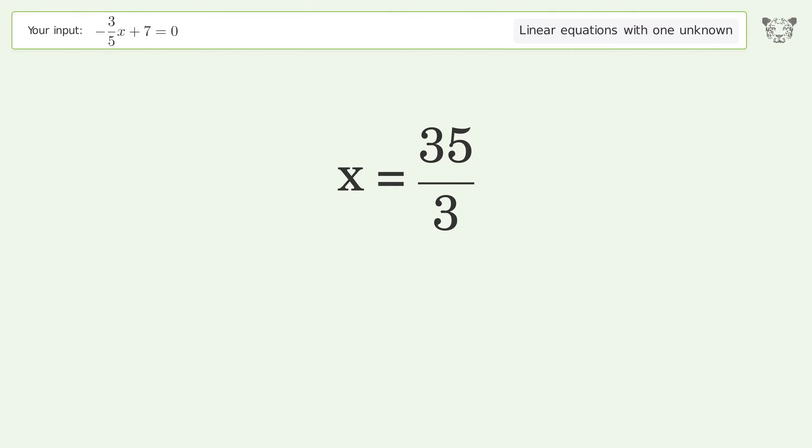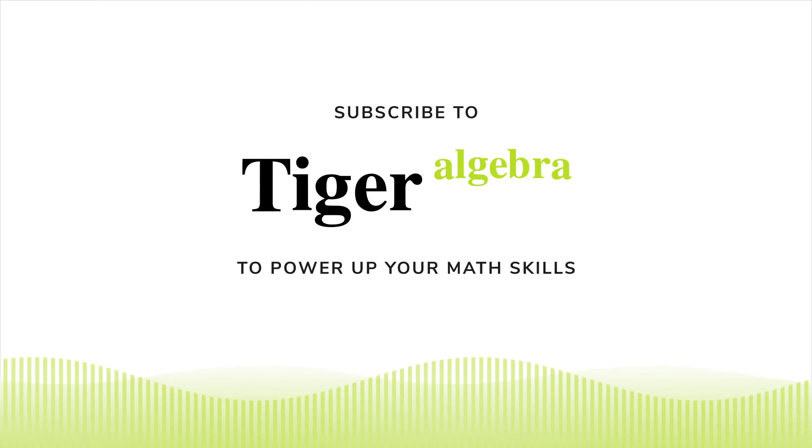And so the final result is x equals 35 over 3.